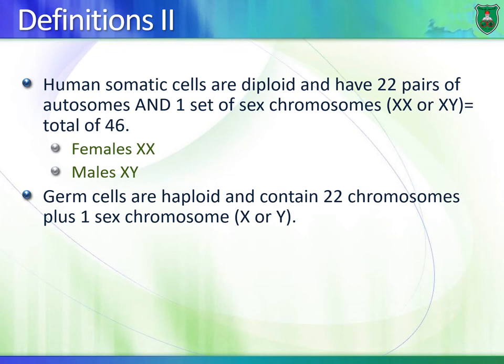Our body is made of somatic cells and they are diploid, meaning there are two copies of every chromosome — one paternal and one maternal. Twenty-two pairs of chromosomes are known as autosomes or autosomal chromosomes, and we have a set of sex chromosomes which can be XX or XY. Germ cells are haploid, meaning they have one set of chromosomes — either maternal or paternal — plus one sex chromosome, which can be either X or Y.